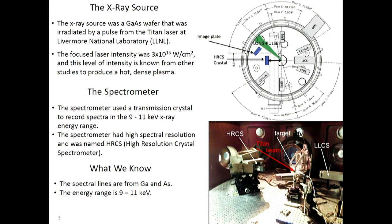The spectrometer was a transmission crystal spectrometer covering a 9 to 11 kilovolt energy range. This spectrometer was high resolution, called the high-resolution crystal spectrometer. Here's a photograph of the inside of the target chamber at the Titan laser. The laser beam comes in through a port into the vacuum chamber, the gallium arsenide target is here, and here's the high-resolution transmission crystal spectrometer. The size of this chamber is about 1 meter or so.